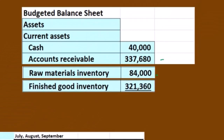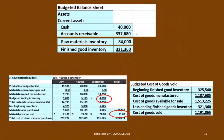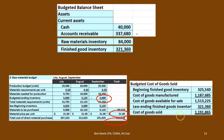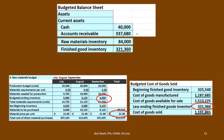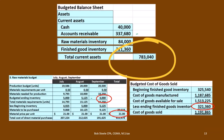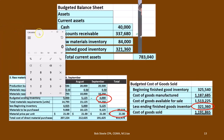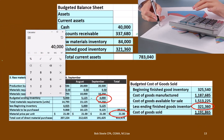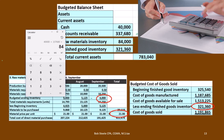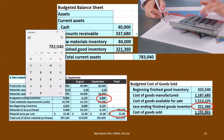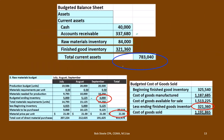Then we've got the finished goods inventory. We can take finished goods inventory from the cost of goods sold calculation. This is going to have to be something that's given in the problem — something we will estimate in real life for the ending finished goods inventory. If we add up the total current assets, that would be $40,000 plus $337,680 plus $84,000 plus $321,360, giving us $783,040 in total current assets.